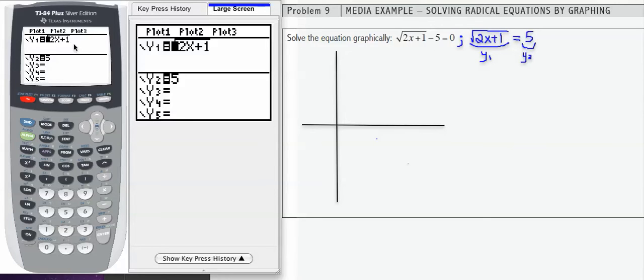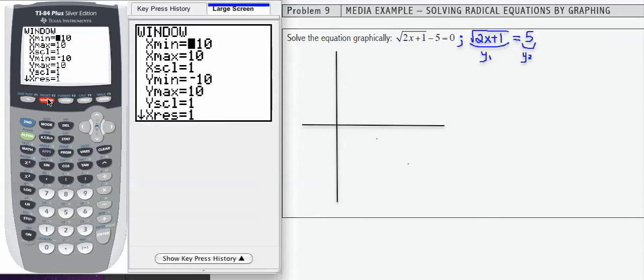So I'm going to put those into my calculator in the y equals list: square root of 2x plus 1 and 5. Now, when I graph, let's check the window. I've got a standard window here. I don't really see any reason to change it at this point. There's nothing about the problem that tells me that I need to change my window.